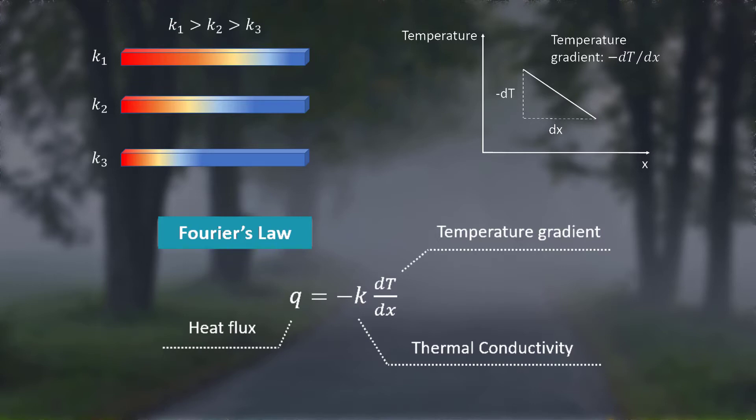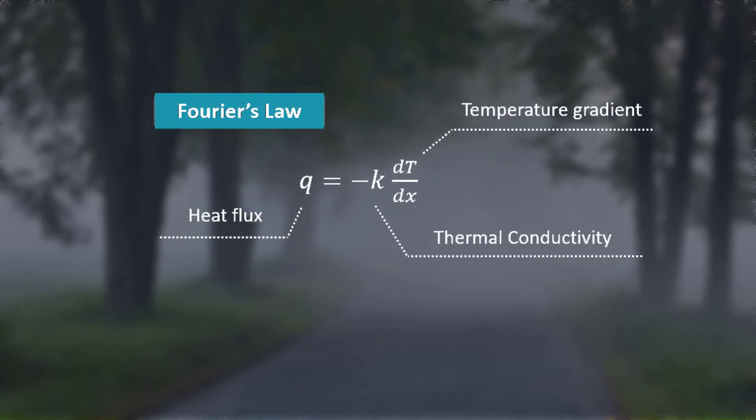As we mentioned before, thermal conductivity represents the material's ability to transfer heat. According to Fourier's law, for a given amount of heat flux, the larger the thermal conductivity is, the smaller the temperature gradient is.